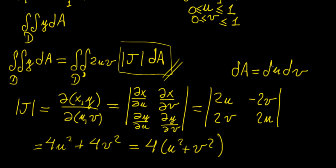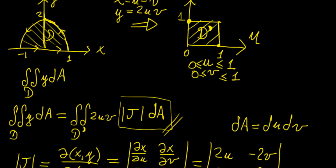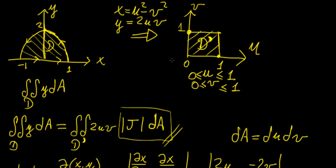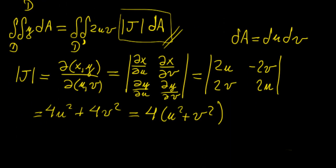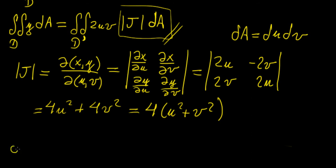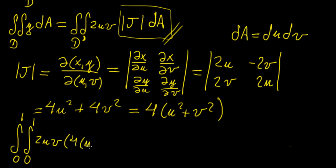We need to be careful about integration order, but since both variables have constant boundaries, it doesn't matter which order we integrate — it will be the same, due to the symmetry of the square. So we rewrite the integral as ∫₀¹∫₀¹ of 2uv times the Jacobian determinant 4(u² + v²), times du dv.